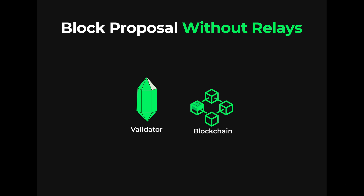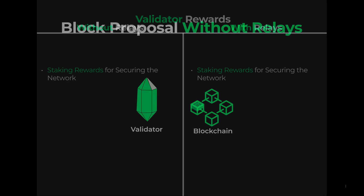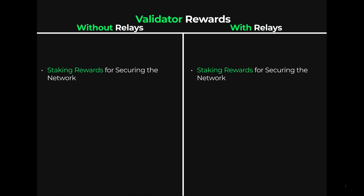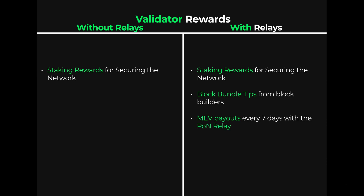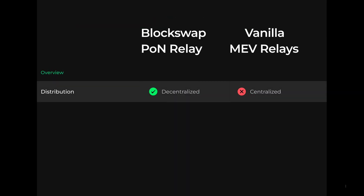There's a good reason that validators go through the trouble of working with relays. With or without relays, validators are earning staking rewards. But with relays, validators can earn tips from block bundles, and with the proof of neutrality relay will collect recurring MEV payouts every seven days. The proof of neutrality relay, also known as the PON relay, is a decentralized protocol built as a solution to the issue with centralized relays.